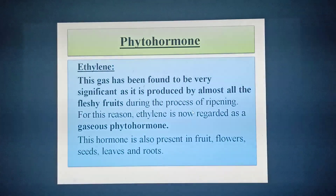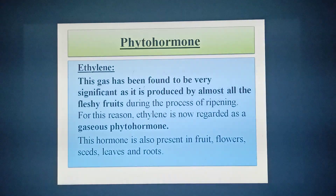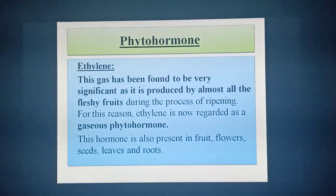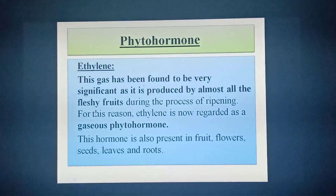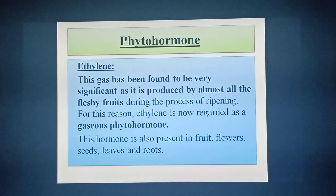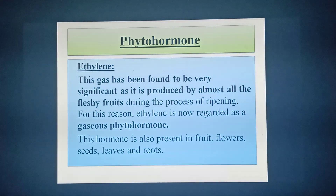The next phytohormone is ethylene. This is important because among all the phytohormones, only ethylene is the gaseous phytohormone. This gas has been found to be very significant as it is produced by almost all fleshy fruits during the process of ripening. For this reason, ethylene is regarded as a gaseous phytohormone. This hormone is also present in flowers, seeds, leaves, and roots. Ethylene is a growth retarding phytohormone because it helps in the ripening of fruits — a green fruit gradually transforms into a ripened fruit due to the direct effect of ethylene.